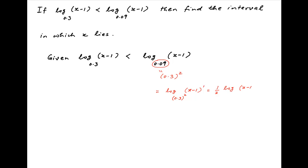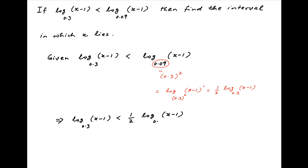Using properties of logarithms, this can be written as half of log of (x minus 1) to the base 0.3. Therefore the inequality becomes log of (x minus 1) to the base 0.3 is less than half of log of (x minus 1) to the base 0.3.